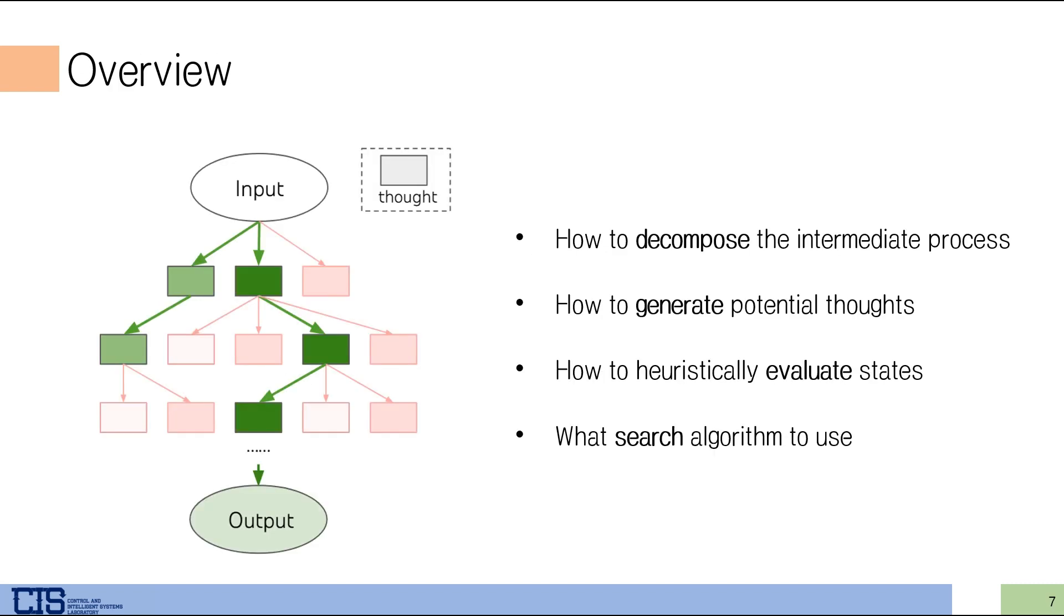This is an overview of the ToT framework. As mentioned, they use various thoughts to make deliberate decisions, and they use a tree structure for problem solving. This process focuses on four questions: how to decompose the intermediate process, how to generate potential thoughts, how to heuristically evaluate the states, and what search algorithm to use.